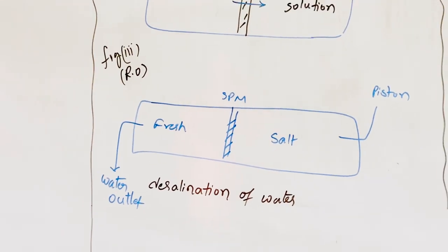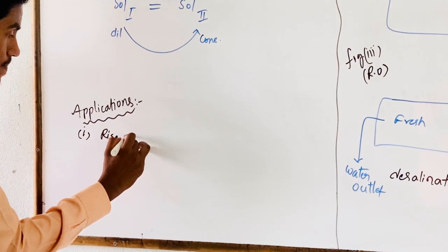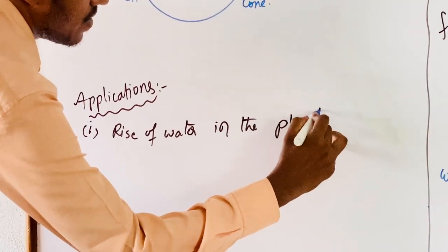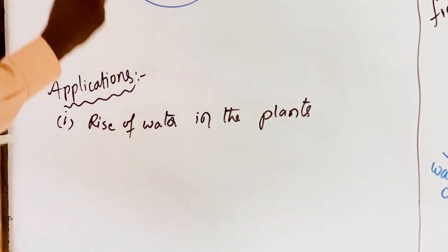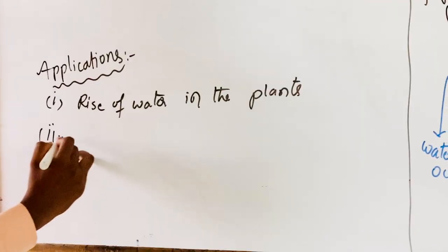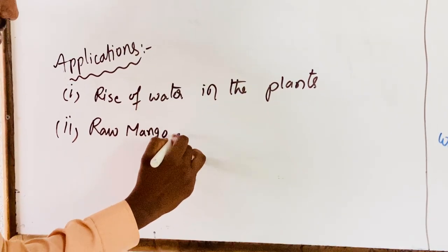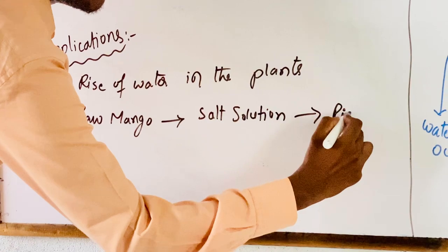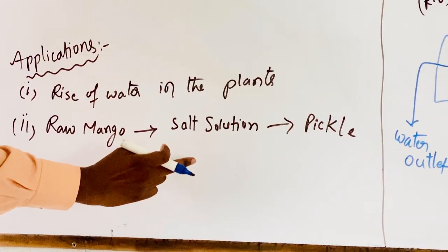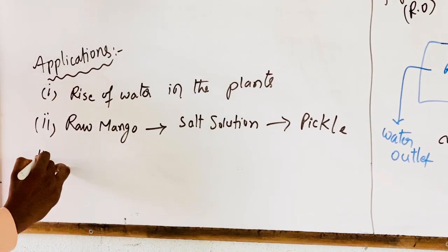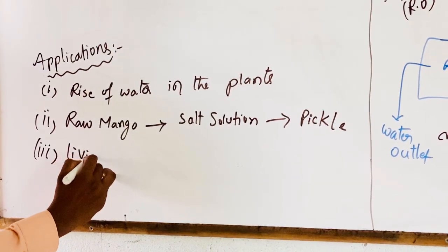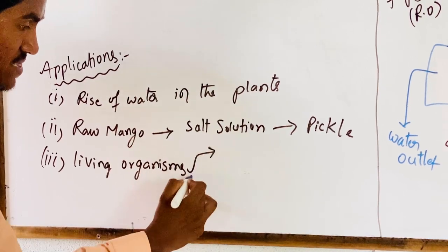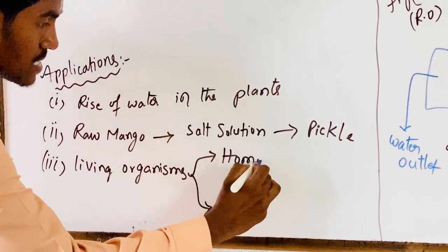Coming to the applications of osmosis. The first application is the rise of water in plants — from the bottom to the leaves — by the osmosis process. The second application is the formation of pickle from raw mango: when raw mango is soaked in a highly concentrated salt solution, it converts into pickle, which can be explained by the osmosis process.